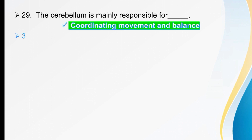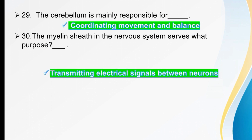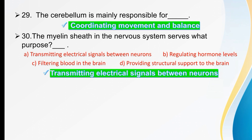The myelin sheath in the nervous system serves what purpose? Options are transmitting electrical signals between neurons, regulating hormone levels, filtration of blood in the brain, or providing structural support to the brain. The myelin sheath in the nervous system serves the purpose of transmitting electrical signals between neurons.